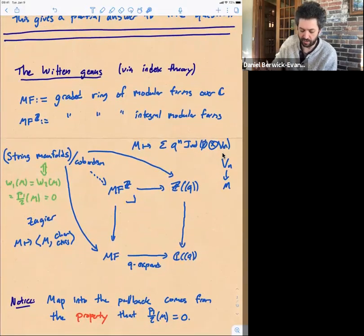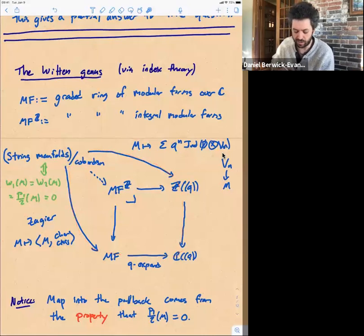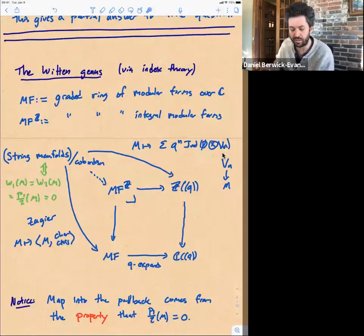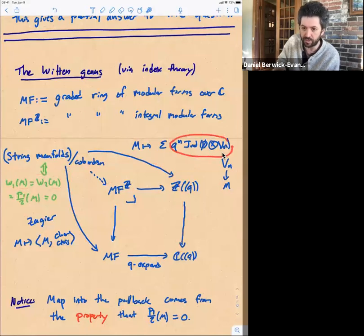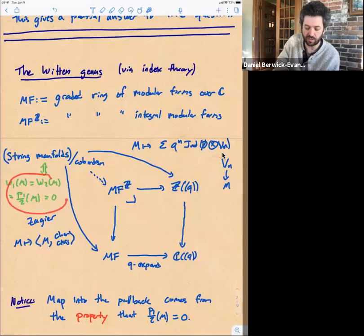I want to emphasize that the map you get into this pullback is really a property — the property being that this composition equals that composition. One of the things that will change later is that it's no longer a property that witnesses the equality of these things, but rather additional data. It's important here that this is just a property to get an integral modular invariant, and that property is precisely that this fractional Pontryagin class vanishes. Part of being a string manifold is that your manifold is spin — that's the first two conditions — and that's what was required to write down these indices. The next condition for being string is that a certain Pontryagin class vanishes, and that's the condition that makes this a modular form. You need all of this to get a map into the pullback, but it's really just properties that these things vanish, not additional data.